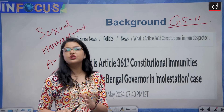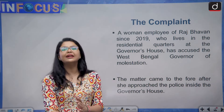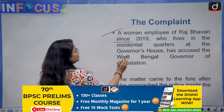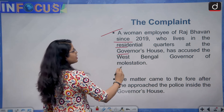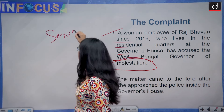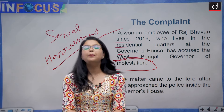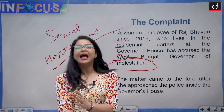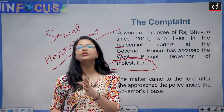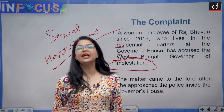A woman employee of Raj Bhavan since 2019, who lives in the residential quarters at the governor's house, has accused the West Bengal governor of molestation — basically sexual harassment. The complaint was lodged with the police of the governor's house, and afterwards the Kolkata police registered a case against the governor. However, due to Article 361, they cannot name him as an accused, neither can they initiate any kind of investigation against him.